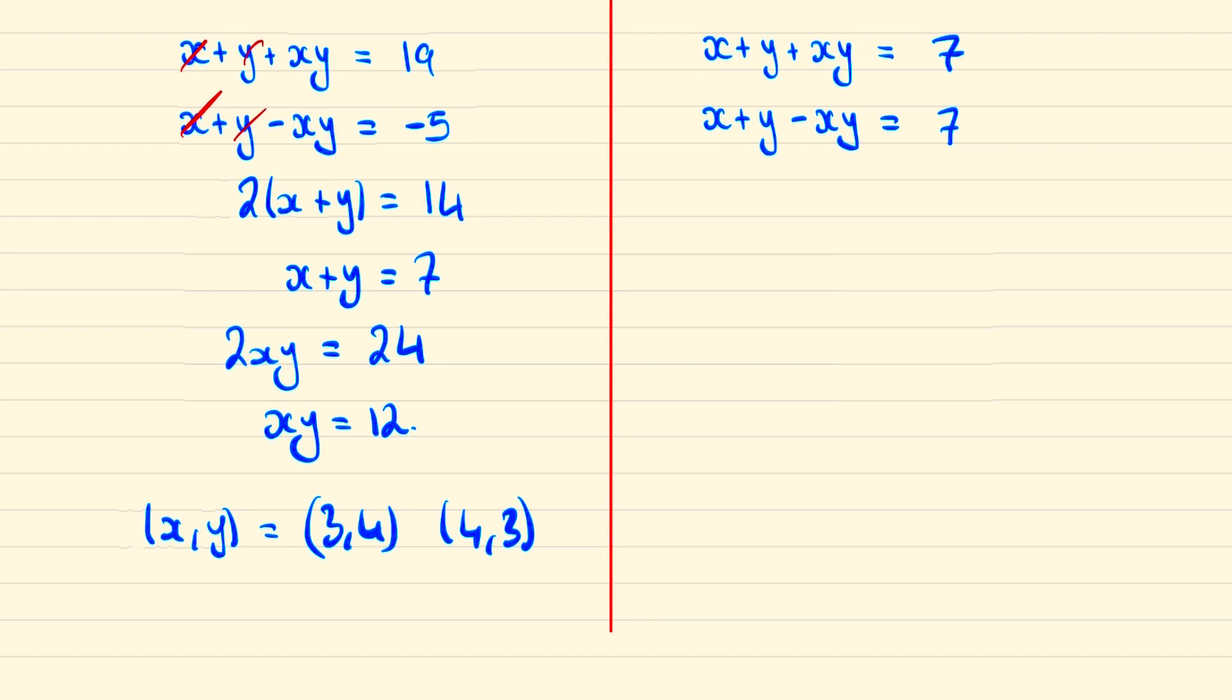We can solve the right case in a very similar fashion. By adding them together we find that x plus y is equal to 7 and by minusing them we find that xy is equal to 0. So therefore the solution here for xy will be 7, 0 or 0, 7. And thus these are the four possible solutions to our question.